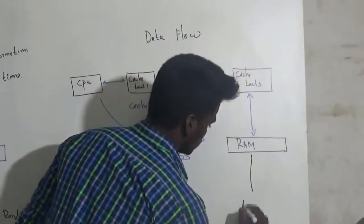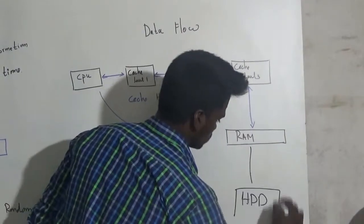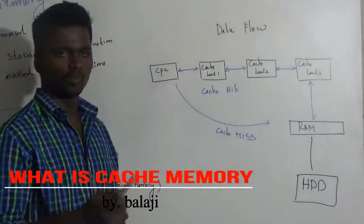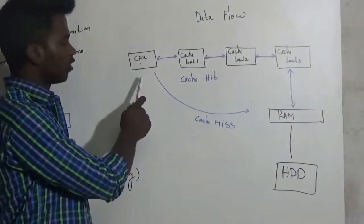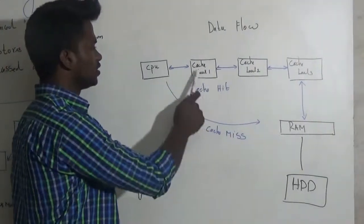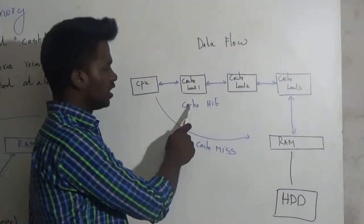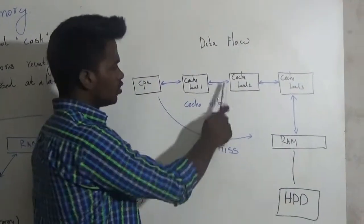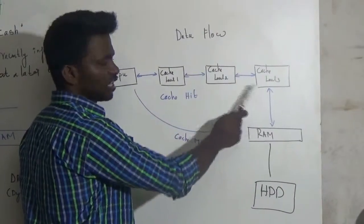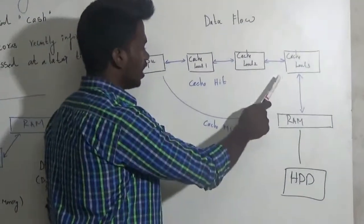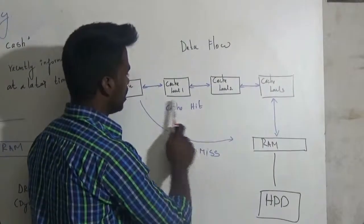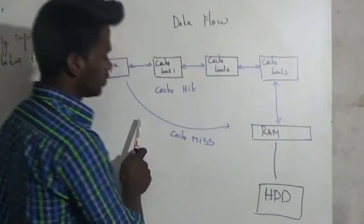This is the CPU cache. The CPU cache is inbuilt. This is the L1 cache. If the data is found in the L1 cache, it is used; otherwise we go to L2 cache. If not found in L2 cache, we go to L3 cache. If the data is not found in any cache level, that is called a cache miss, and we then access the RAM.